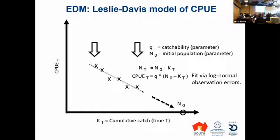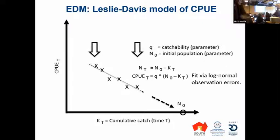The model coming up will actually be able to model non-linear observation equations as well — not just Q times N, but Q times N to a power. But that's not part of this talk; you can reference the 2017 paper for that.